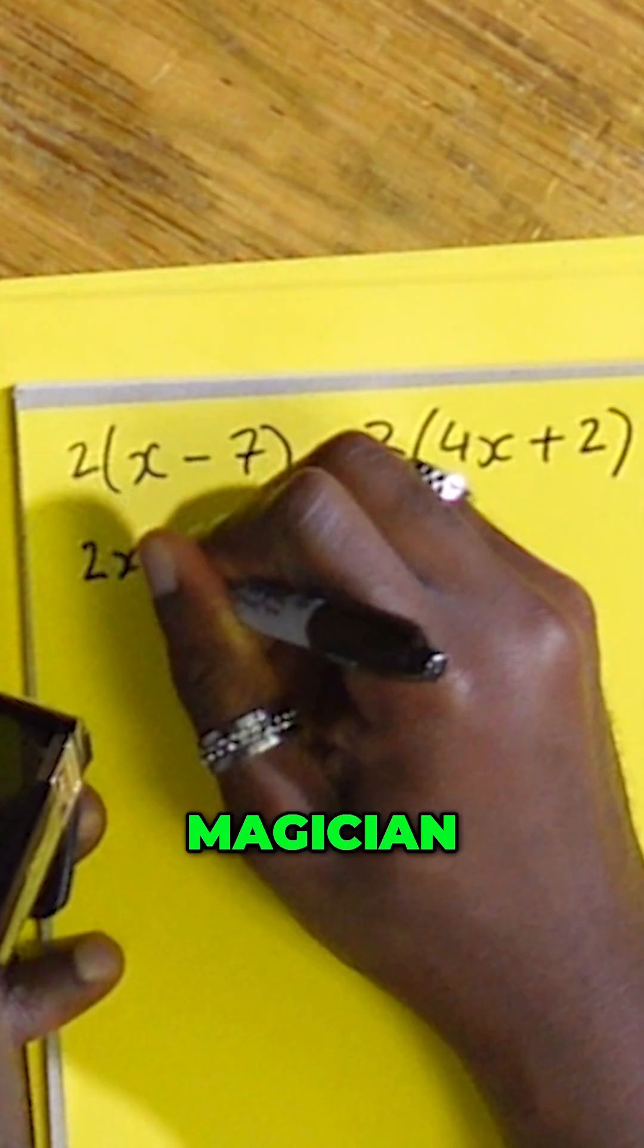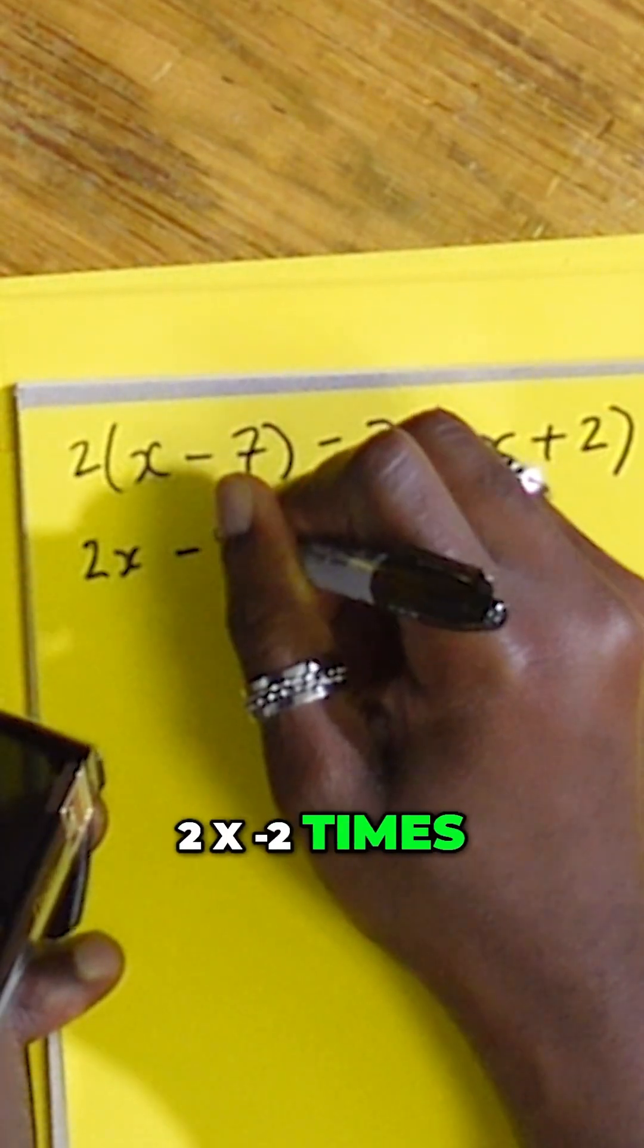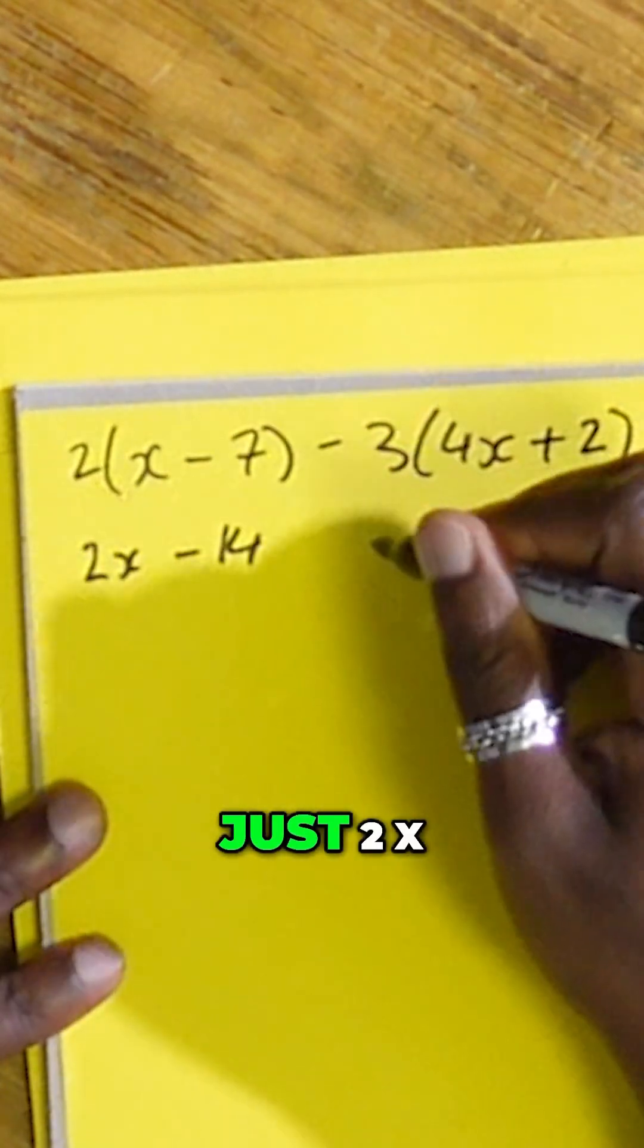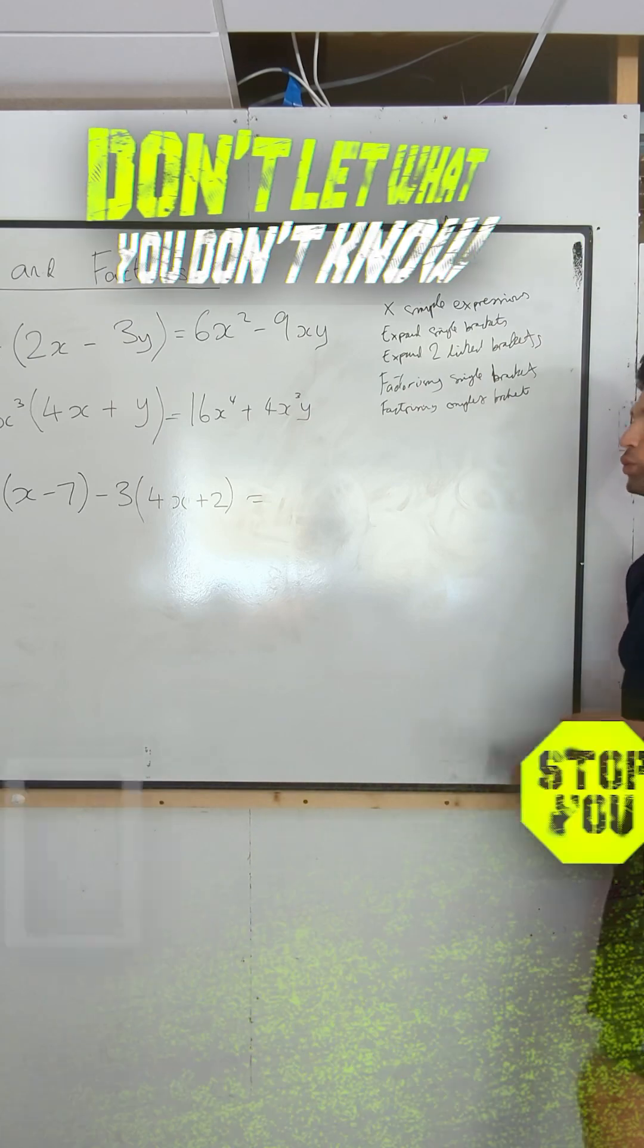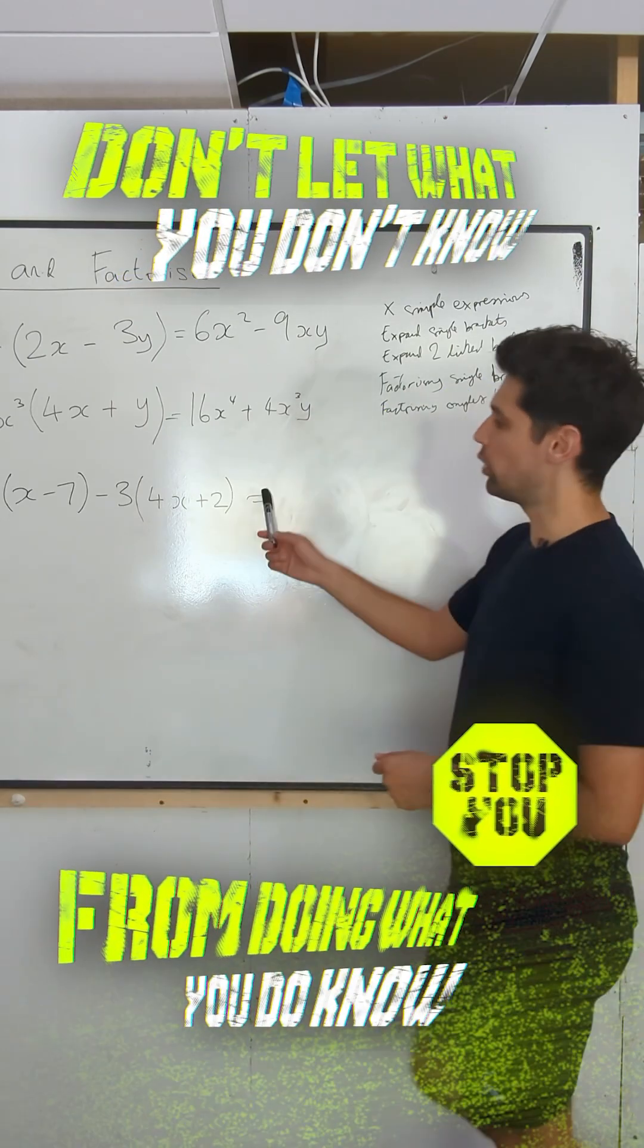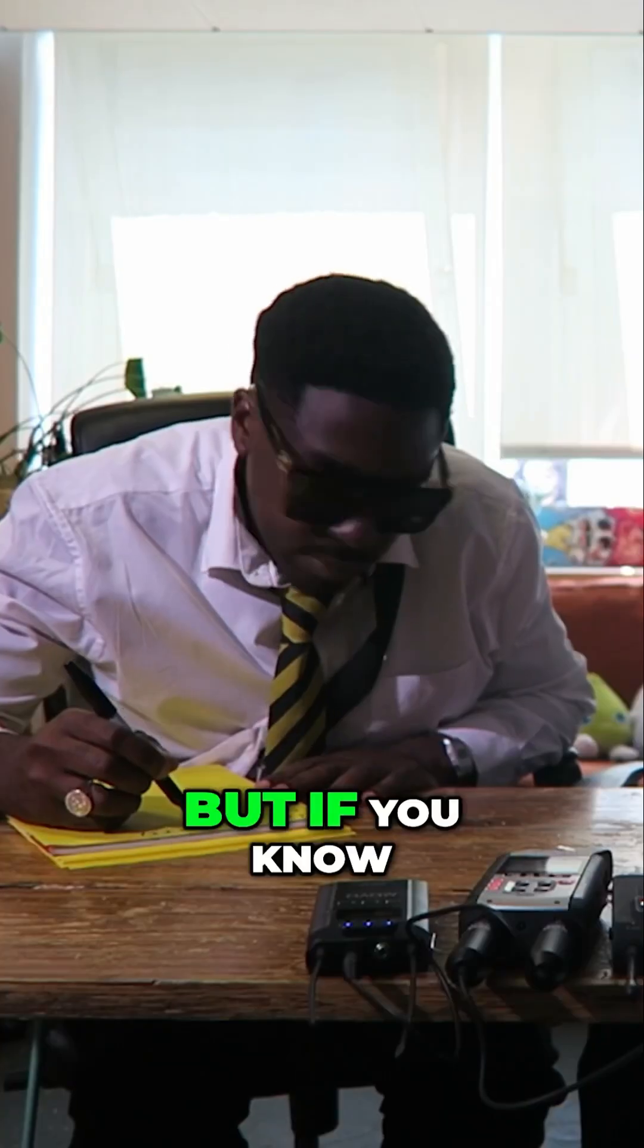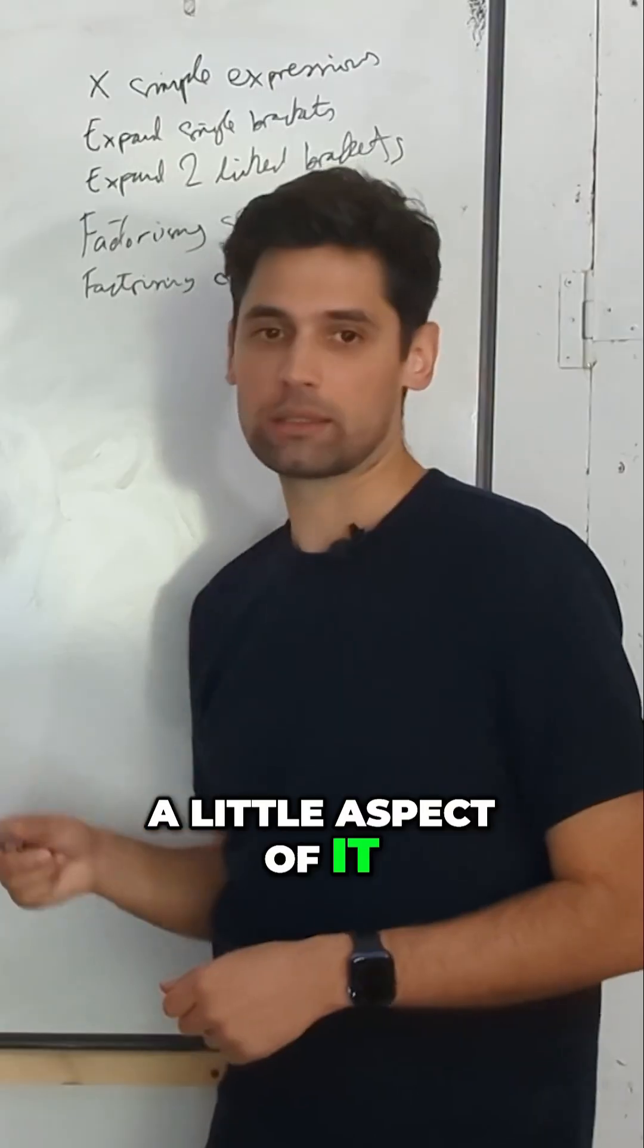I'm a magician. Two X minus two times seven is 14, which is two X. Once again, don't let what you don't know stop you from doing what you do know. It looks complicated all in one here, but if you know how to do just a little aspect of it, just do it.